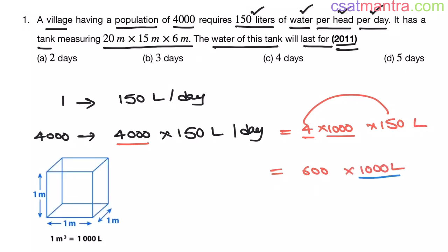We know 1000 liters is equal to 1 meter cube my friends. 1000 liters is equal to 1 meter cube. In a tank which has 1 meter length, 1 meter breadth and 1 meter height, you can fill 1000 liters of water. It makes sense.